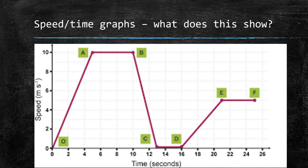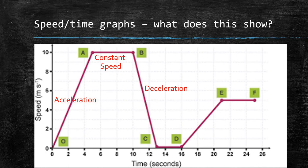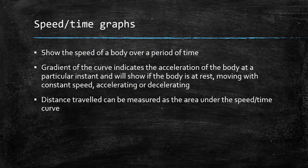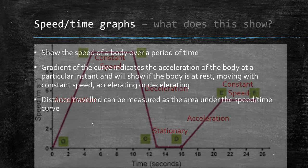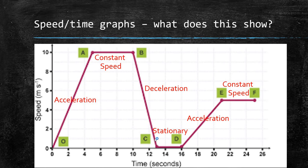Moving on to speed-time graphs. Looking at the example graph: here we have acceleration — speed is increasing as time goes on. Then constant speed. Then deceleration. Then stationary — speed is zero, so they're resting or still. Then more acceleration and more constant speed. Speed-time graphs show the speed of a body over a period of time. The gradient of the curve indicates the acceleration of the body at a particular instant, showing if the body is at rest, moving at constant speed, or accelerating or decelerating. Distance travelled can be measured as the area under the speed-time curve — calculating the area under a section tells you how far the performer has moved by that time.